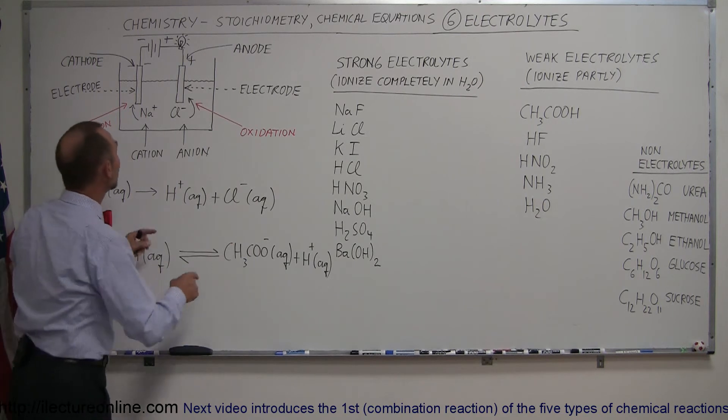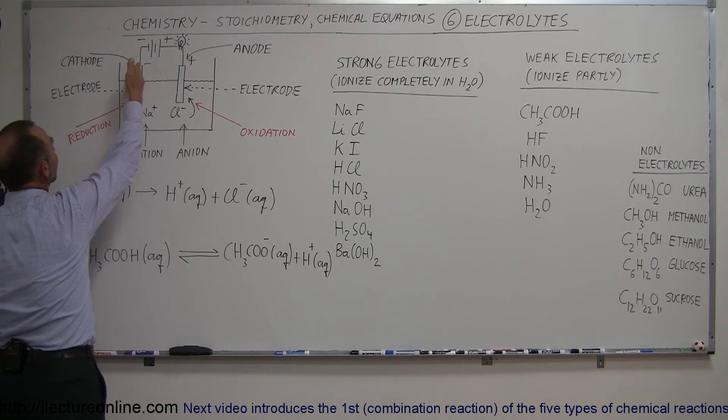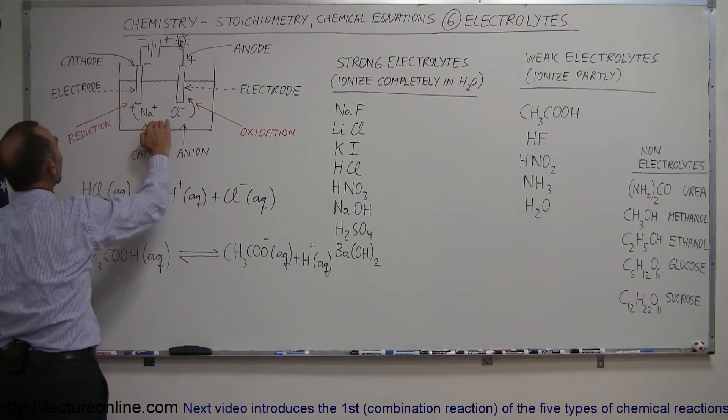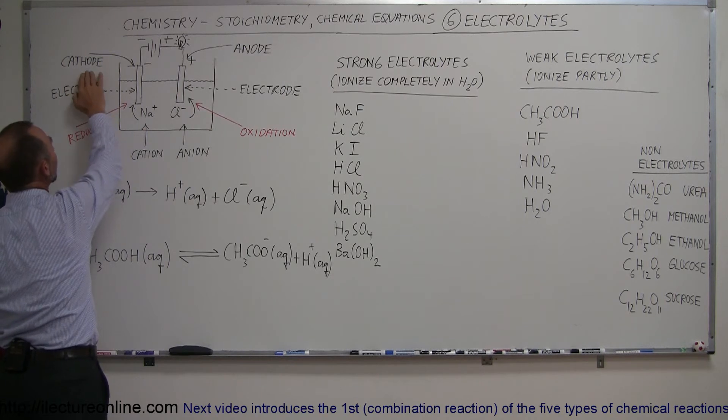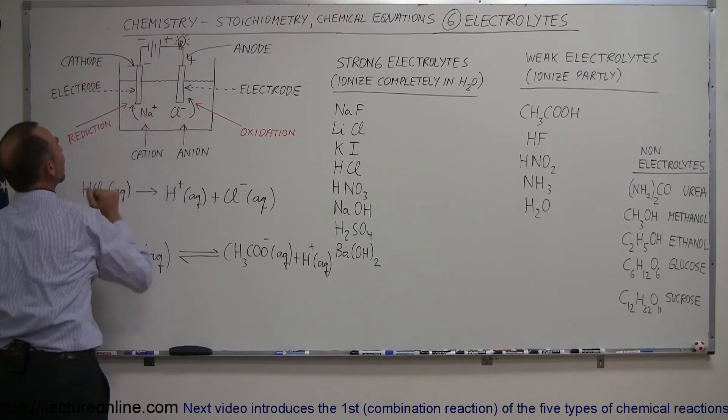Now, what do we call these electrodes? Well, it turns out the electrode that is negatively charged, which attracts cations, is called the cathode. So the cathode is the electrode that's negatively charged which attracts positive ions.